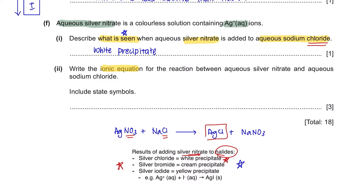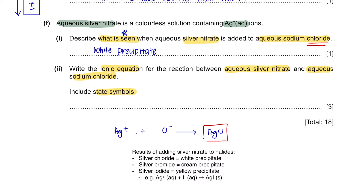Part 2: Write the ionic equation for the reaction between aqueous silver nitrate and aqueous sodium chloride, including state symbols. From the full chemical equation, we focus on the precipitate formed, which is silver chloride. The ionic equation is: Ag⁺(aq) + Cl⁻(aq) → AgCl(s). Remember that state symbols for ions are always aqueous and for precipitates always solid. The equation is in a 1:1 ratio, so it is balanced.